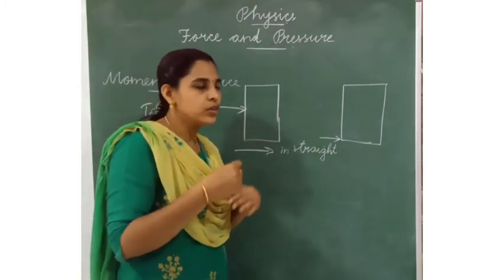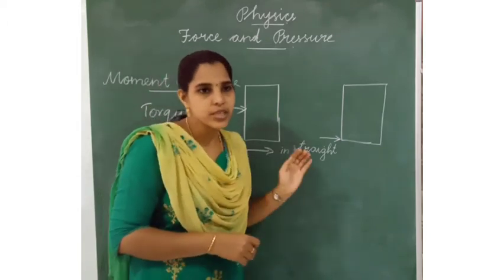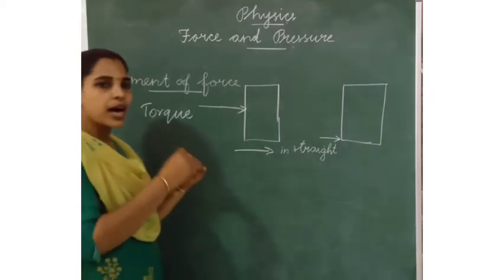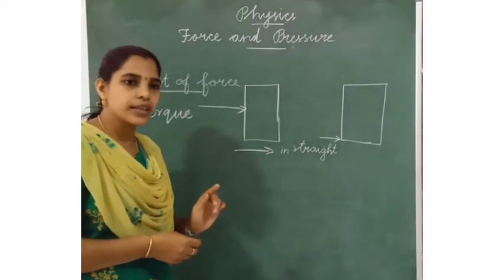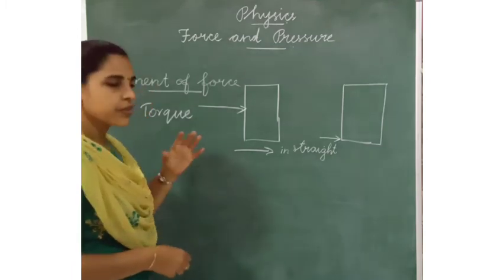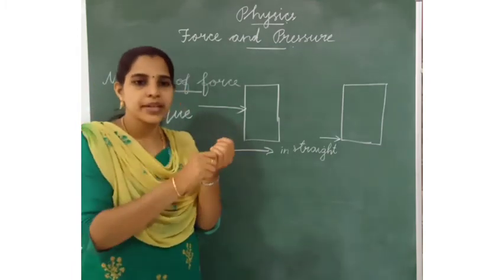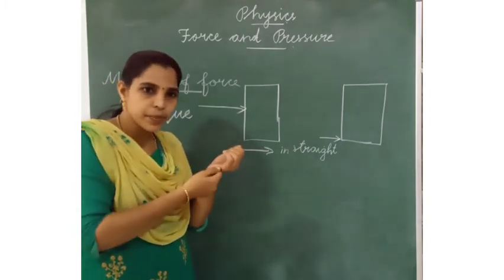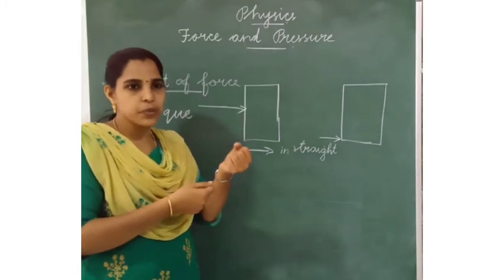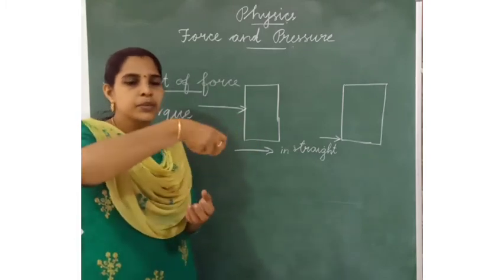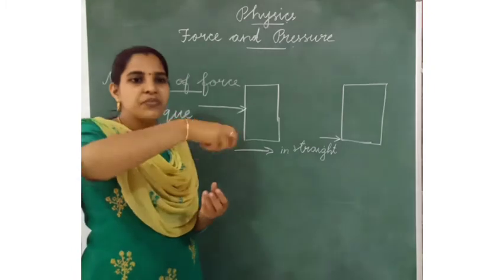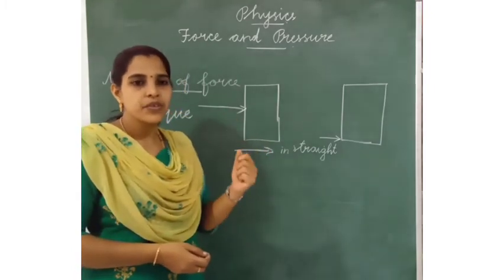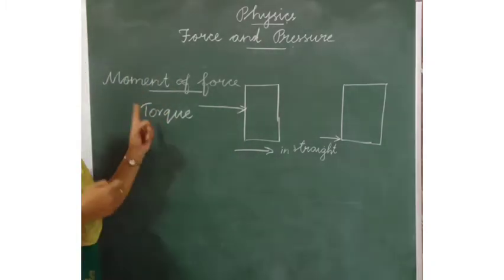Already we know about fulcrum. Fulcrum is the fixed point. In the chalk also, we have one fixed point or fulcrum or pivot. For example, when we sharpen the pencil using the sharpener, the pencil will rotate. The sharpener is the fixed point. When we open the bottle cap, the cap will rotate and the bottle is the fixed point.